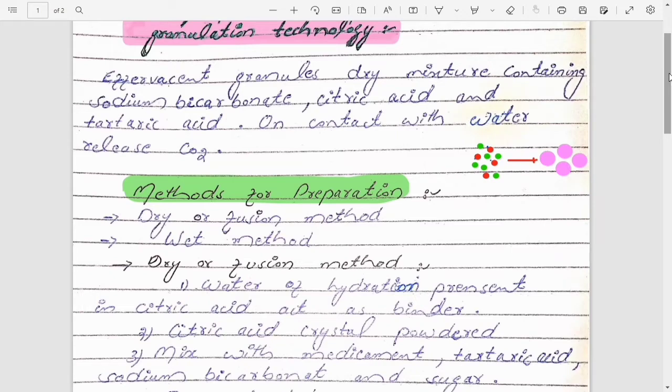are hygroscopic in nature, so we have to close these granules in airtight containers. Hygroscopicity is a process in which a solid particle or solid powder or solid material captures the moisture from the environment and converts into soft mass.